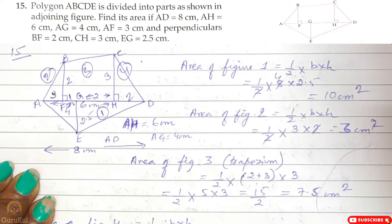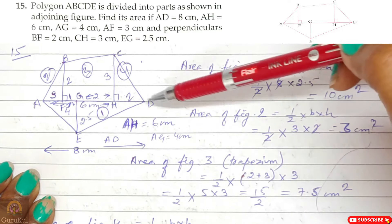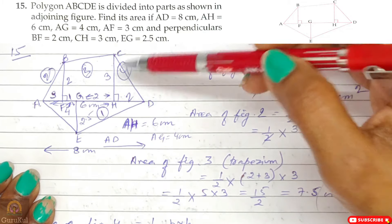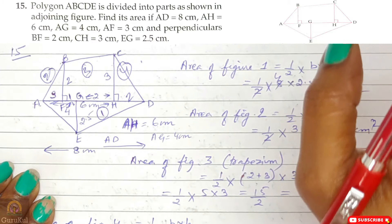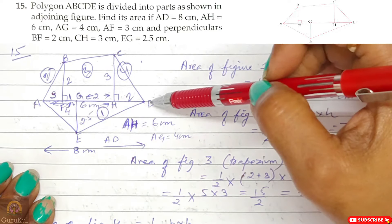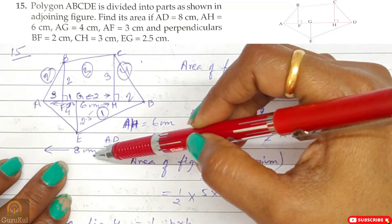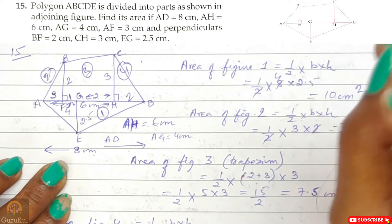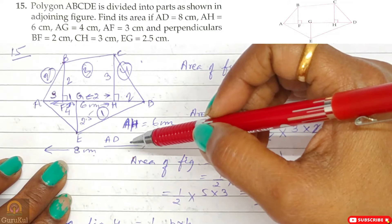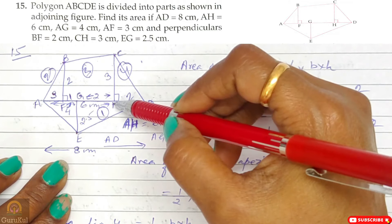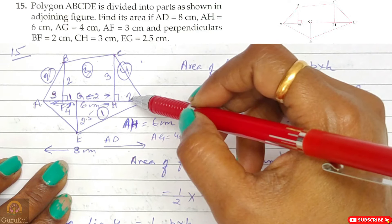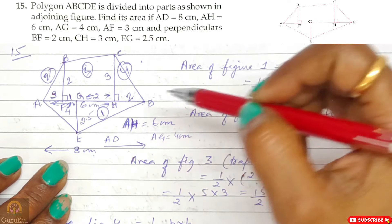Question number 15: Polygon ABCDE is divided into 4 parts. AD = 8 cm, AH = 6 cm, so HD = 8 − 6 = 2 cm. AG = 4 cm. GH = 8 − (4 + 2) = 2 cm. AF = 3 cm, so FG = 4 − 3 = 1 cm. BF = 2 cm, CH = 3 cm, EG = 2.5 cm.